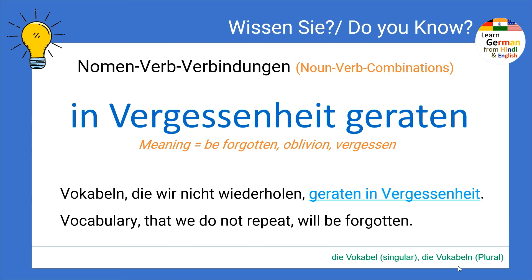Hello Leute, I'm Vicente. Do you know what are Nomen-Verb-Verbindungen? If you have no idea, then I will tell you in this video what are noun-verb combinations. Today we are going to see the example 'in Vergessenheit geraten', which means 'to be forgotten' or oblivion, and the German verb for Vergessen means to forget.